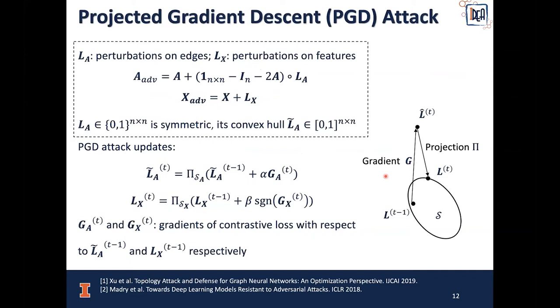In this work, we use the Projected Gradient Descent (PGD) attack as our attack method. We define L_A and L_X as the perturbations on the edges and features respectively. L_A takes a value from 0 to 1 for each element. If the value is 0, there will be no modifications. If the value is 1, there will be modification at that position, either deleting an edge or adding an edge. However, L_A is discrete data. For optimization purposes, we relax it to its convex hull L_tilde_A in the range of 0 to 1 for every element. In this case, each element of L_tilde_A corresponds to the probability of edge modification at that position.